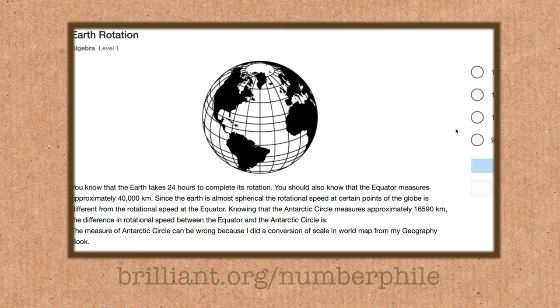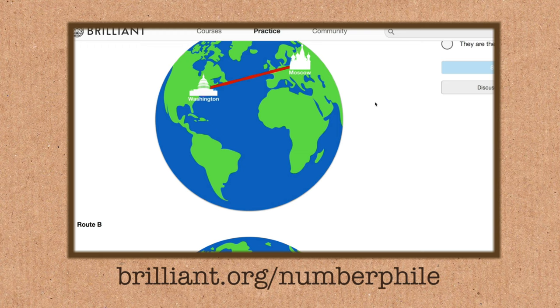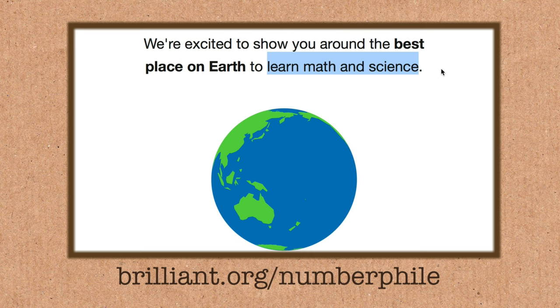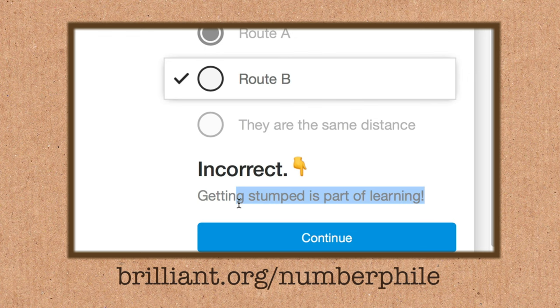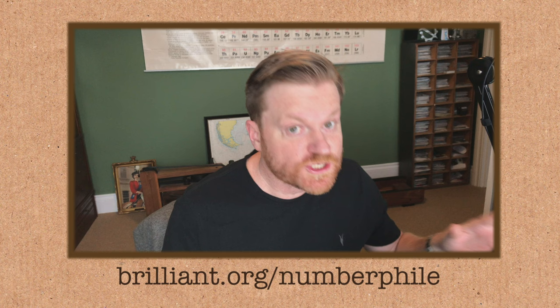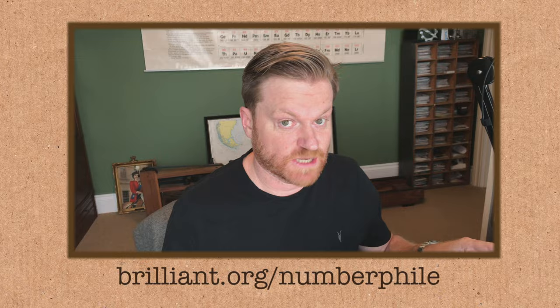Check out these problems and questions — all of them involve the Earth, maps, and globes, and they're on Brilliant.org, who are the supporter of today's video. Brilliant is full of quizzes, courses, and puzzles on all sorts of subjects from mathematics and science. Don't feel intimidated — this is about changing the way you think and making you better at attacking problems. Go to brilliant.org/numberphile to check it all out. If you sign up for premium membership, you get 20% off with slash numberphile. Thanks to Brilliant for trying to make the world a smarter place.